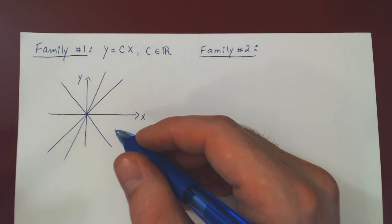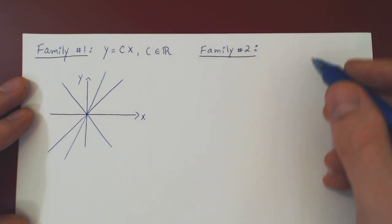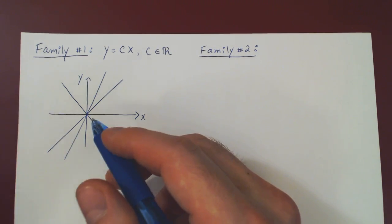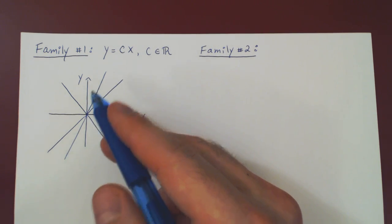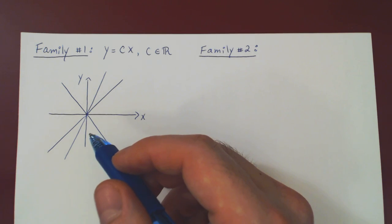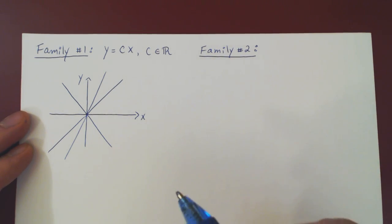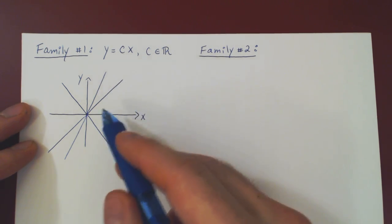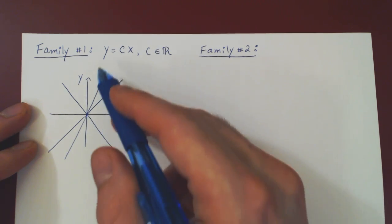So how do we solve this problem? How do we find this orthogonal family of curves? Well, let's see first if we can get, in this case, as the first family is fairly simple, if we can guess, using our geometric intuition, what family number 2 will actually be equal to.